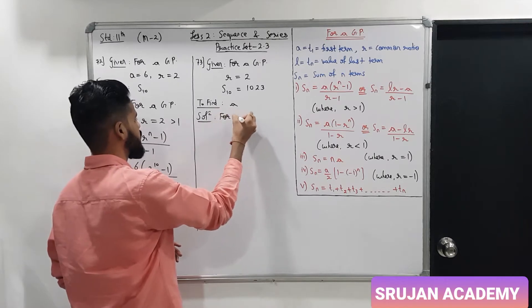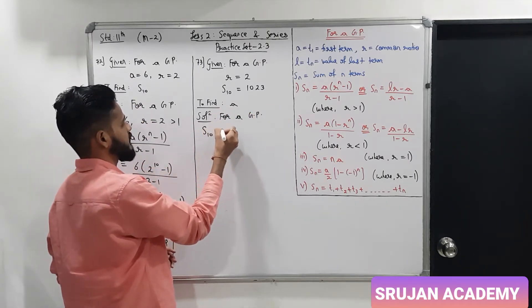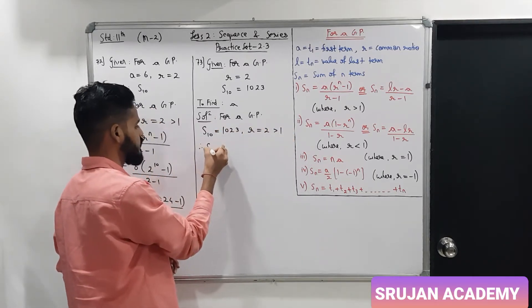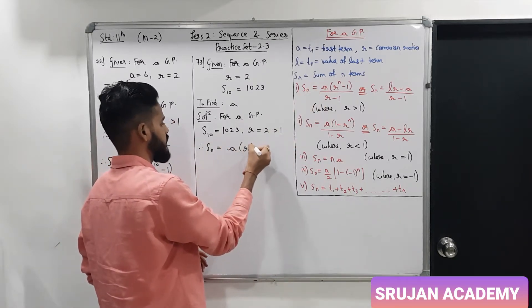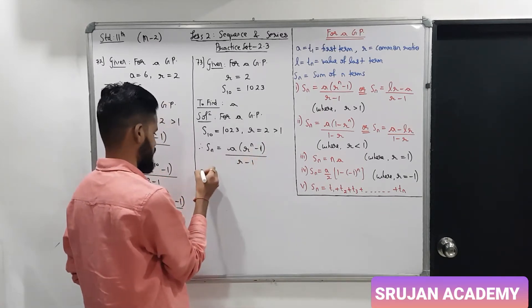So, for a GP, S10 is 1023, and R is 2, which is greater than 1. So, S10 formula is a into R raise to n minus 1 upon R minus 1.